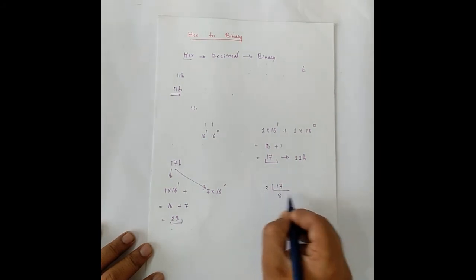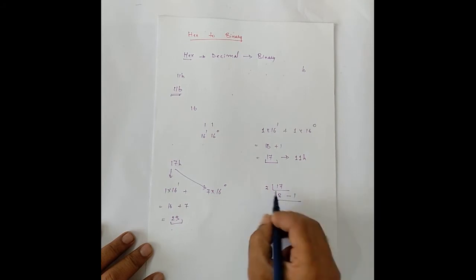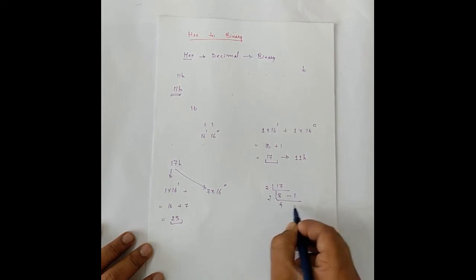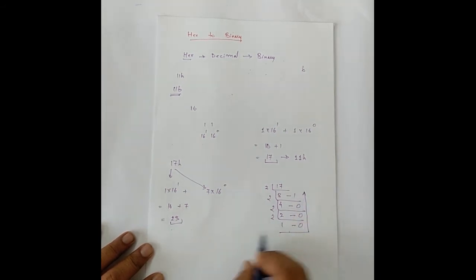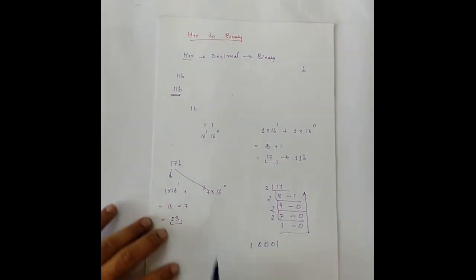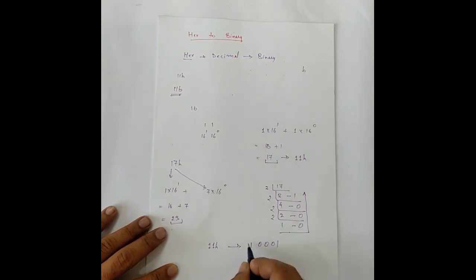So, it gives us 8 remainder 1. 2, 4 times is 8 remainder is 0. 2, 2 times is 4 remainder is 0. And 2, 1 times is 2 and remainder is 0. So, our binary value is 1 0 0 0 1. So, we can say 11h. 11 in hexadecimal is 1 0 0 0 1 in binary.